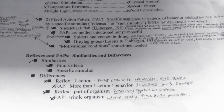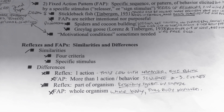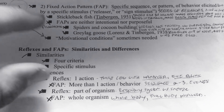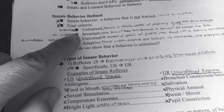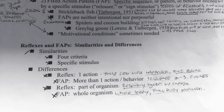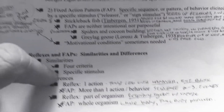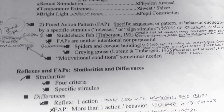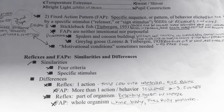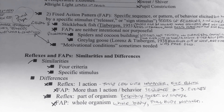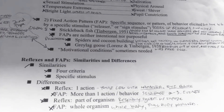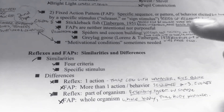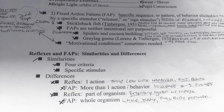Let's go over the similarities and differences between reflexes and fixed action patterns. They both meet the four criteria we talked about earlier: unlearned, invariant, universal, and adaptive. They both also need a specific stimulus — whether it be the stickleback fish seeing a fish with a red belly, or a doctor hitting your knee with a small hammer.